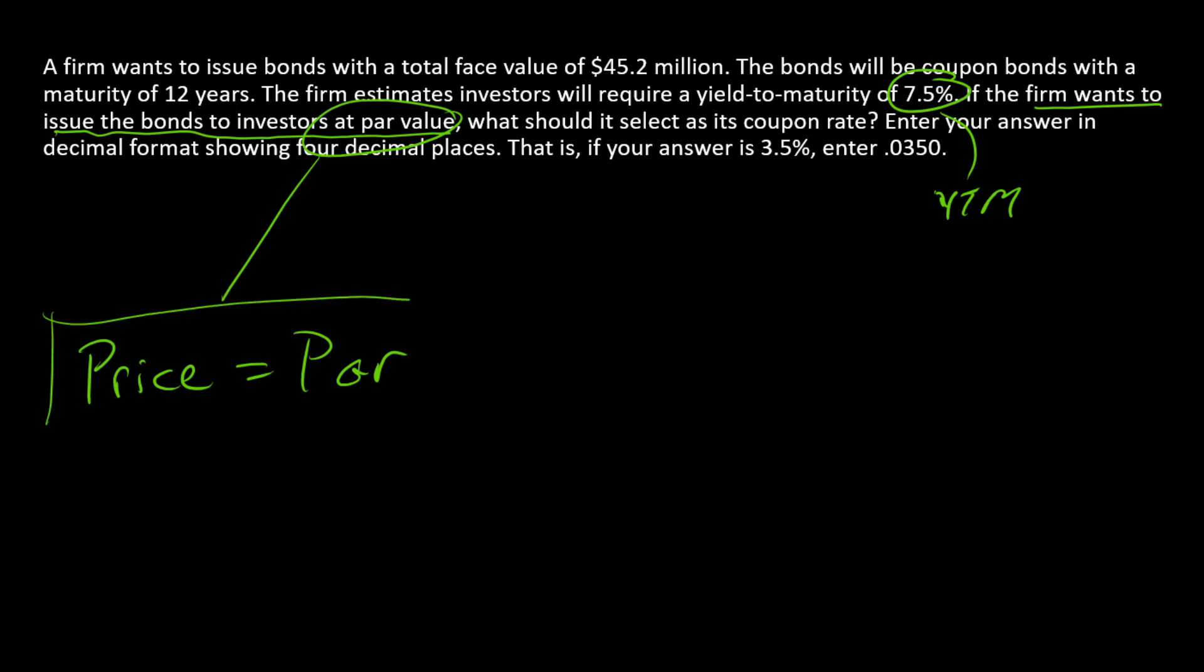So if this is the goal, price is equal to par, then what is the firm going to want to do? They're just going to say the coupon rate that we choose is going to equal the yield to maturity or 7.5%. And there's the answer.